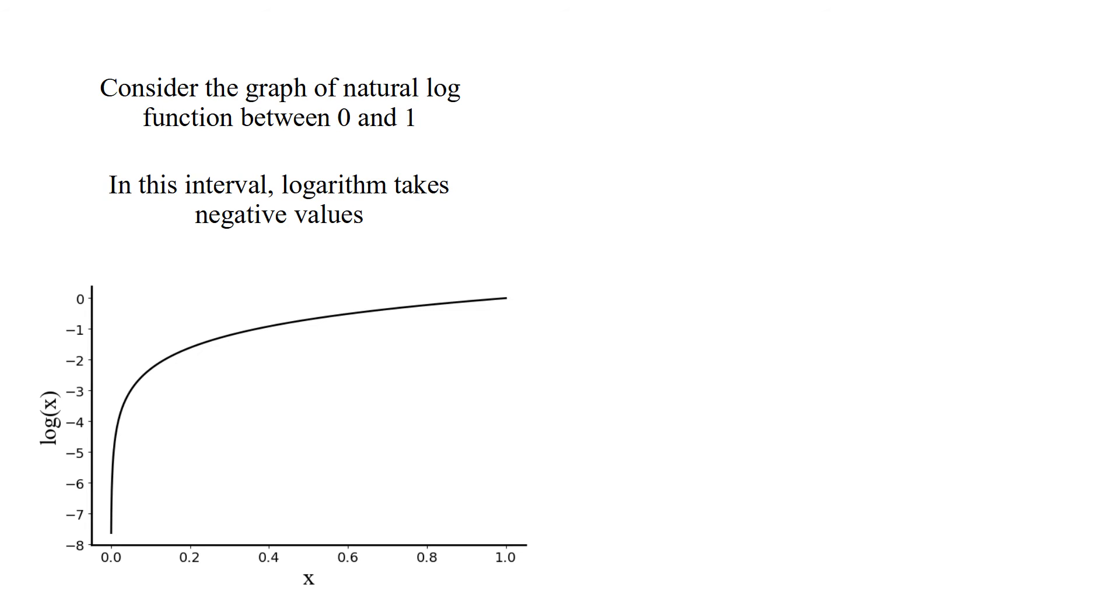Consider the graph of natural log function between 0 and 1. In this interval, logarithm takes negative values. That's why log result is multiplied with minus 1 to compute loss.